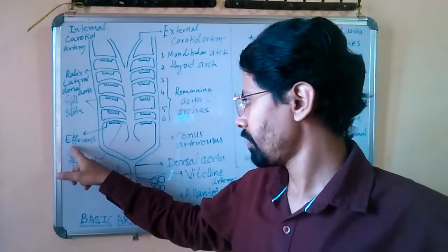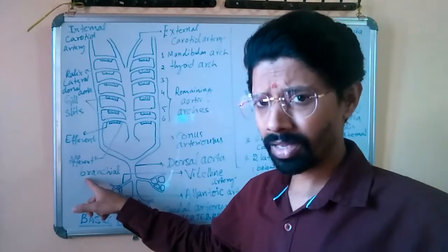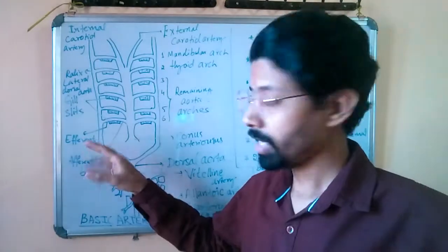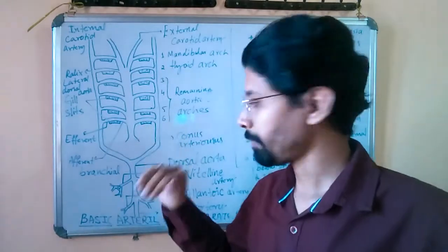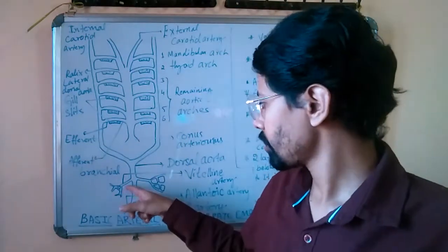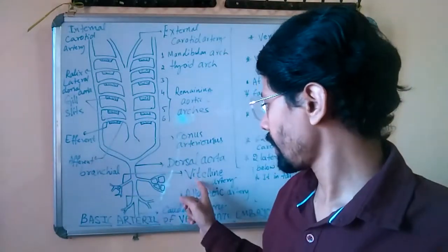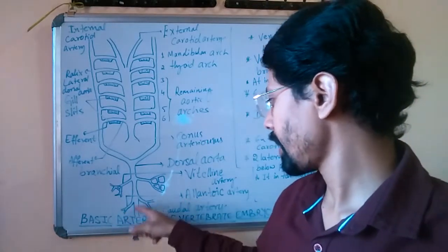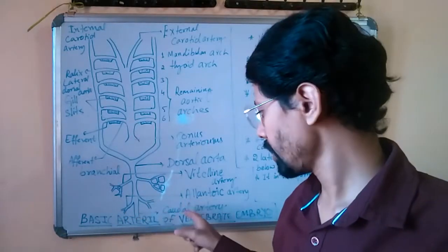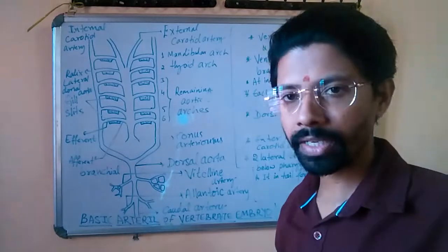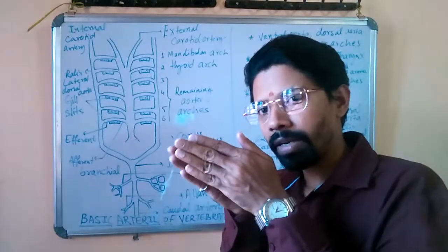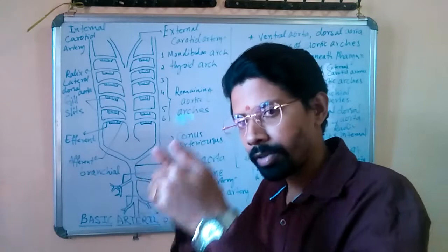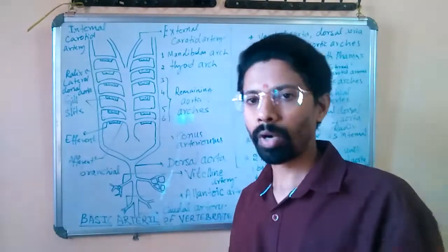It can be termed as afferent branchial artery or efferent branchial artery — two types, afferent and efferent. Then it is further branched into the vitelline artery, then further divided into the allantoic artery, and continues into the tail region as the caudal artery. The caudal artery is the main dorsal aorta which continues into the tail region of vertebrates.